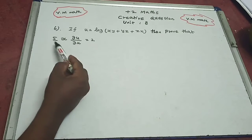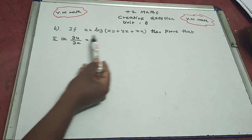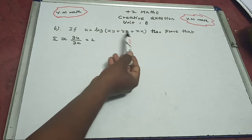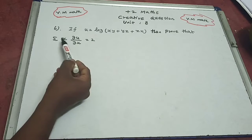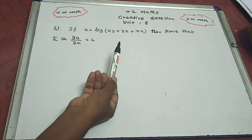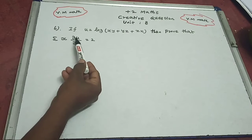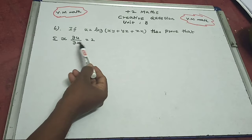So summation with three terms: xy, yz, zx - three variables. x into ∂u/∂x plus y into ∂u/∂y plus z into ∂u/∂z.